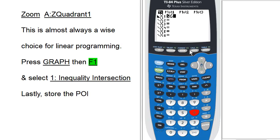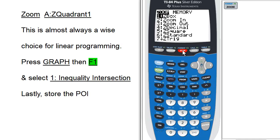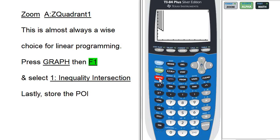From here, we're going to press Zoom and option A, and that's Zoom Quadrant 1.